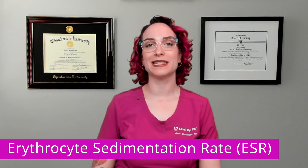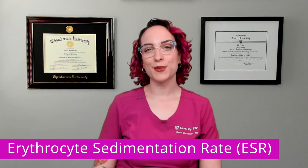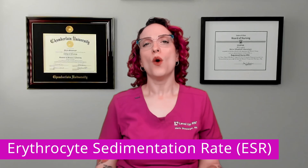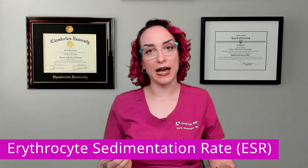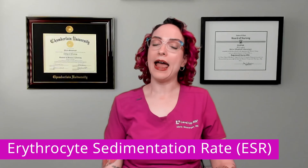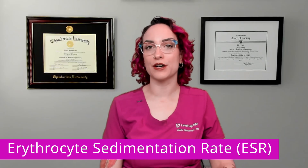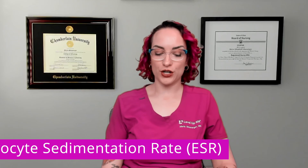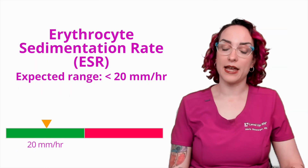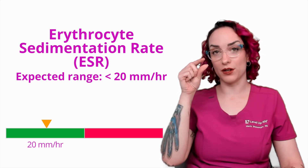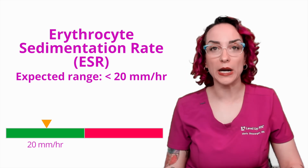So first, let's talk about what these lab values are. The first one is ESR, erythrocyte sedimentation rate. The name kind of tells you what it is — we're looking at how much time it takes for red blood cells to settle at the bottom of a test tube. This usually happens pretty slowly. The expected range is going to be less than 20 millimeters per hour.